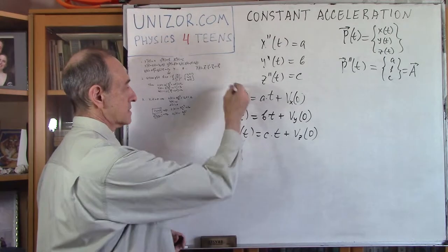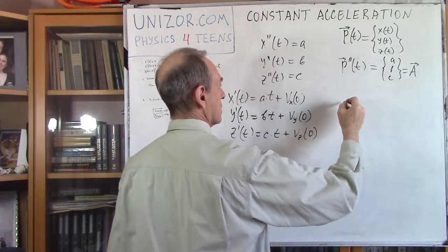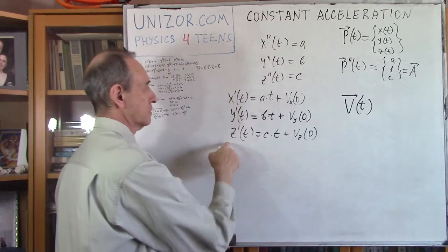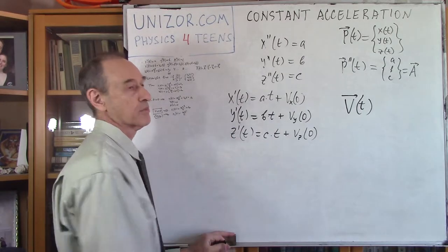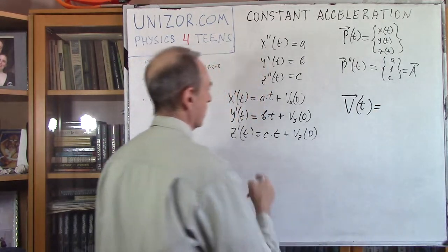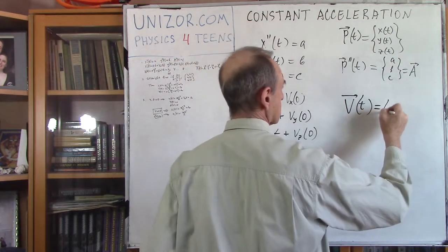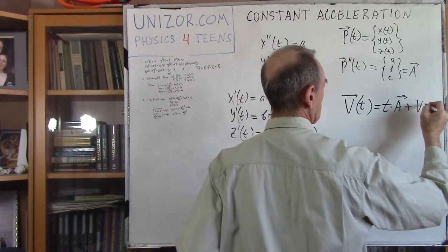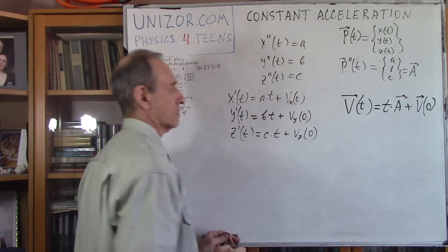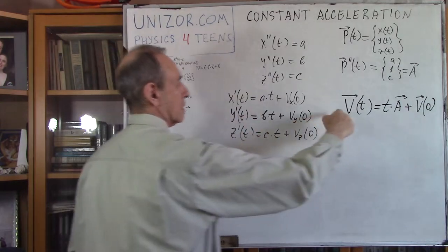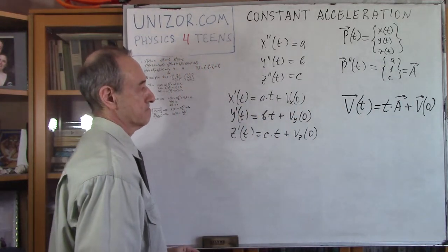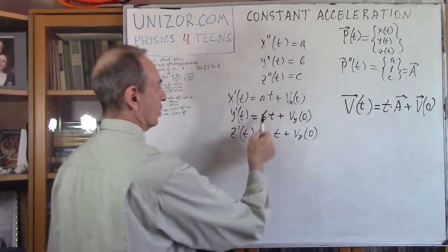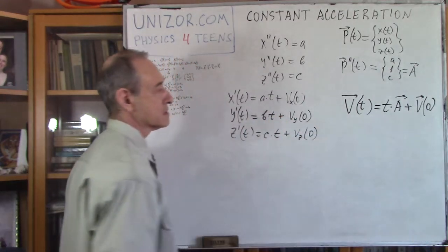Let's express this again in vector format. This is my velocity at time t — that's what x-prime, y-prime, and z-prime are. It equals t times the vector a, b, c — which is t times vector a — plus the initial velocity vector at time 0. So this is the same as the three component equations. The initial velocity has components a, b, c for acceleration and components of velocity at moment t.